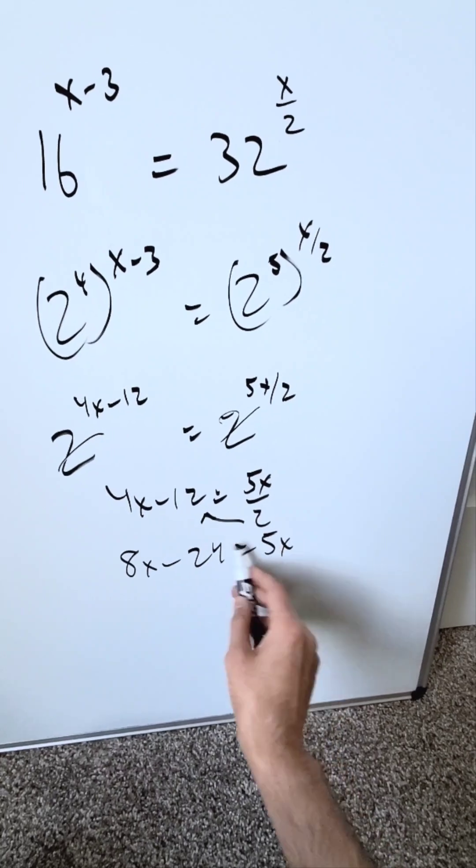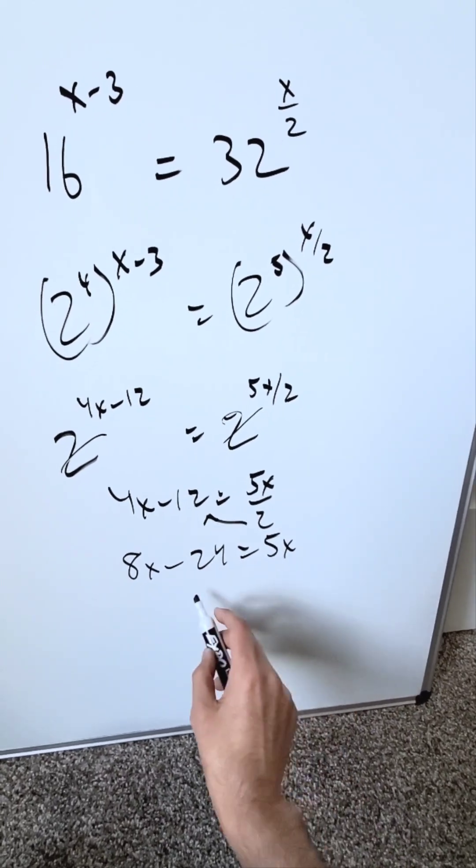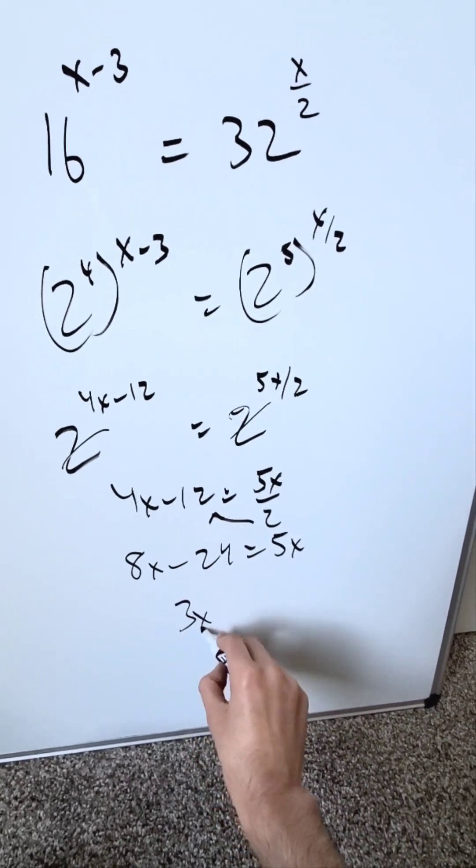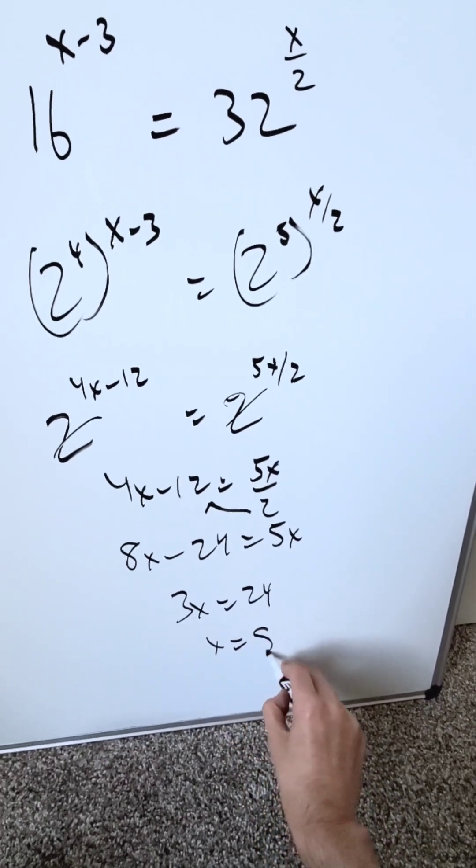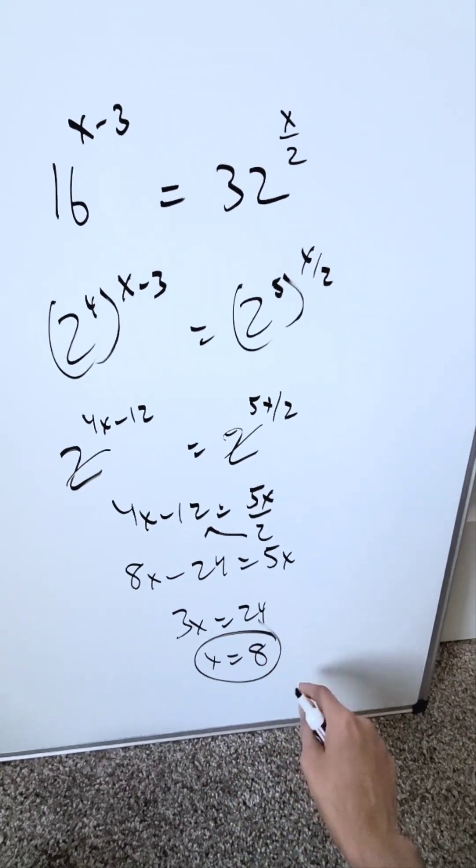Solve it. Push the x value here and push the constant on the other side. What do I have? I have 3x is equal to 24, x here is equal to 8, and the answer would be correct.